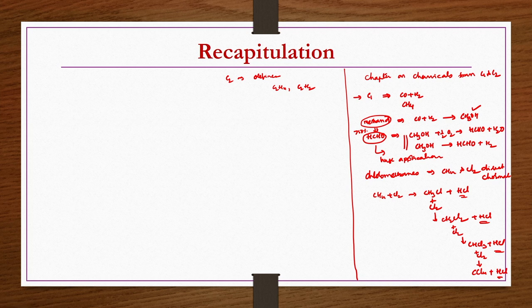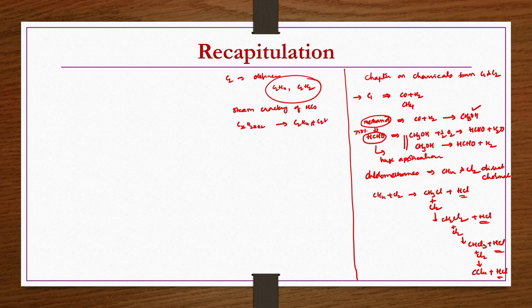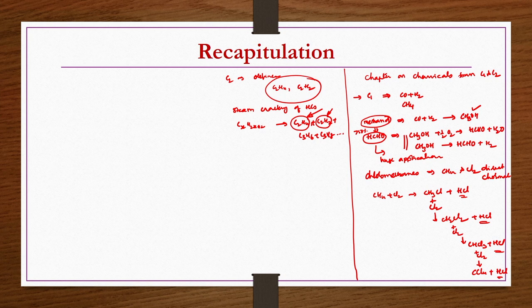Before producing chemicals from C2 compounds, we discussed their production. Steam cracking of a general hydrocarbon CxH(2x+2) gives C2H4, C2H2, C3H6, C3H8, and other compounds. Reaction conditions are managed so that more ethylene and acetylene are obtained, since ethylene is the most important olefin and acetylene is the second most important C2 compound, based on their wide range of applications.